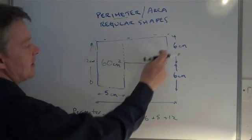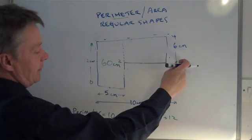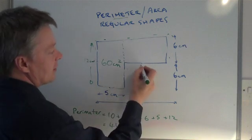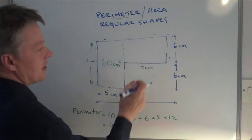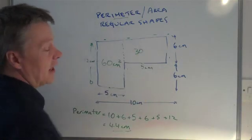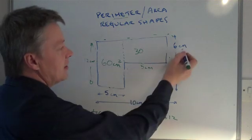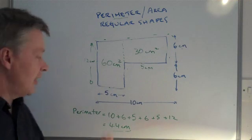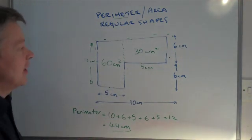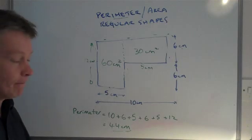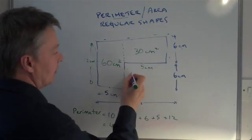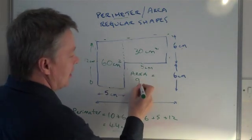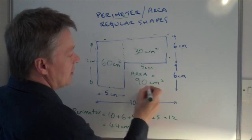The other thing to be aware of is this block here. I know it's 6 there, and I know it's 5 along here, because 10 minus 5 is 5 centimetres. 6 times 5 is 30, and again it's centimetres times centimetres, which is centimetres squared. So therefore, to work out the area of this shape, I just simply add these two numbers together. So the area is 60 plus 30, which is 90 centimetres squared.